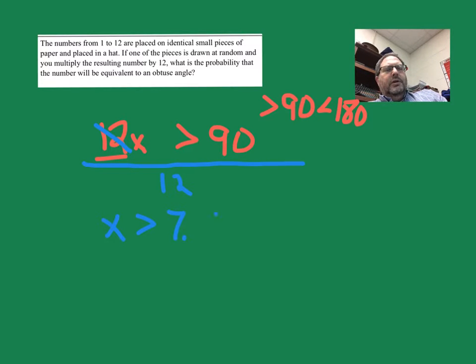So now to the final piece, 7.5. We need numbers that are bigger than that and we only put whole numbers in the hat. So that would be the number 8, the number 9, the number 10, the number 11, and the number 12.